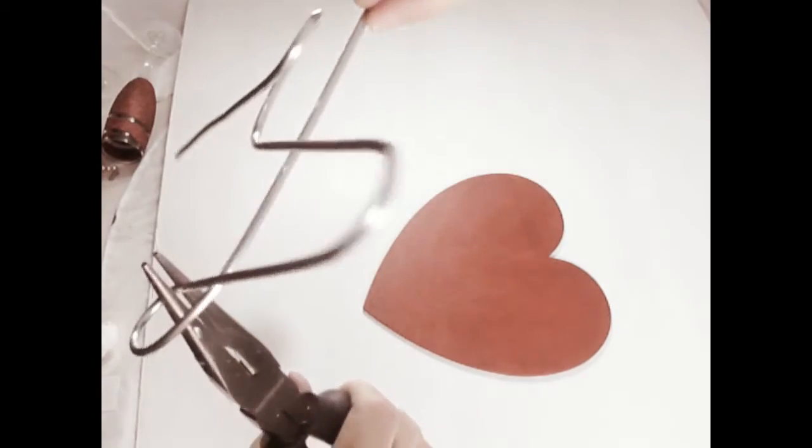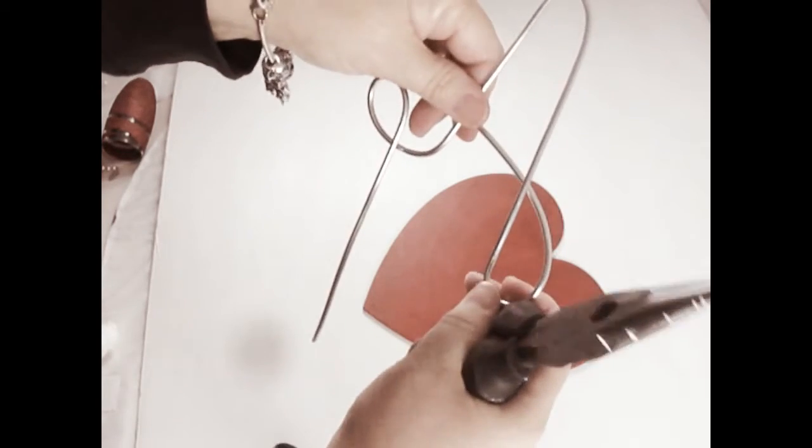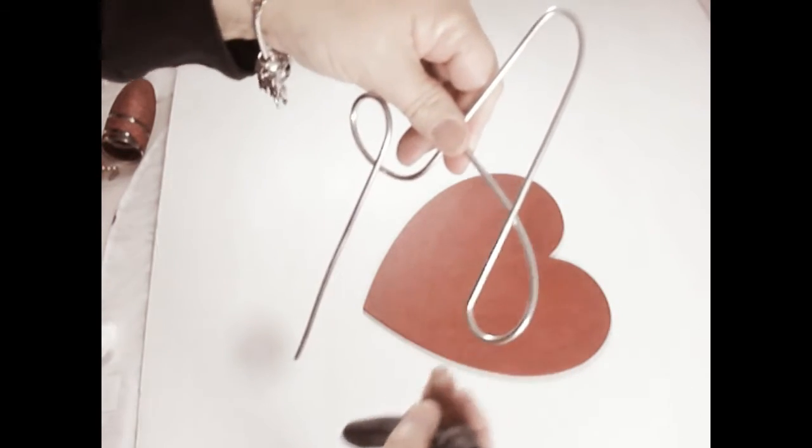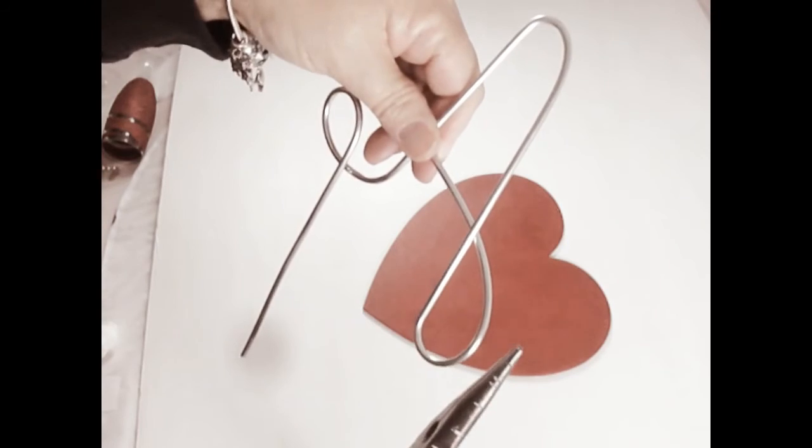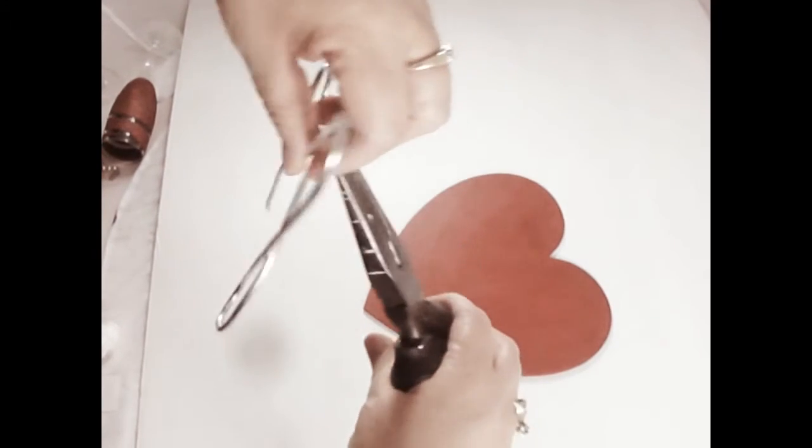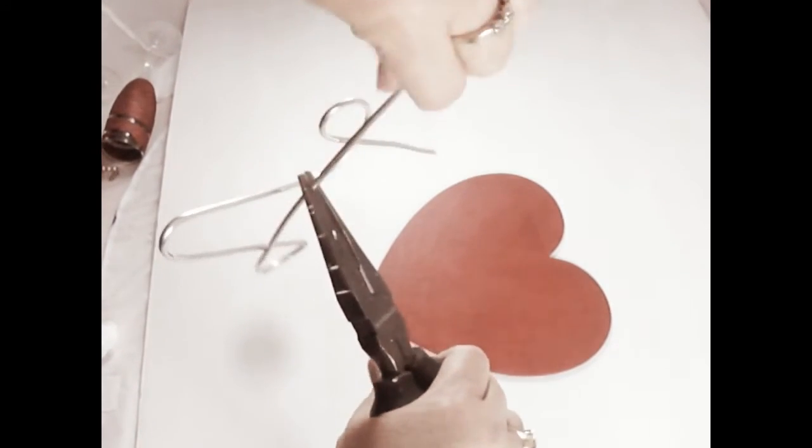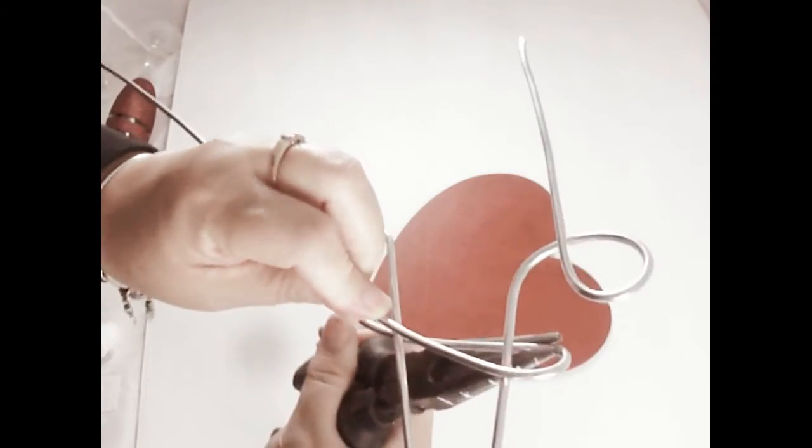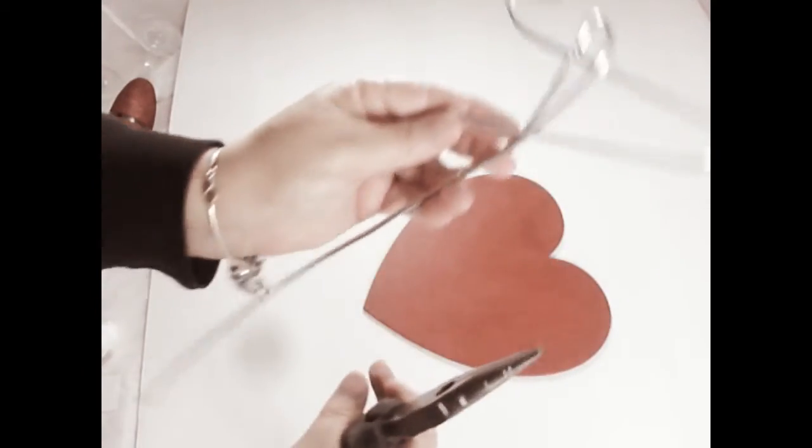Then you're going to take your pliers, come in from behind, and pull this wire piece over the top like that.